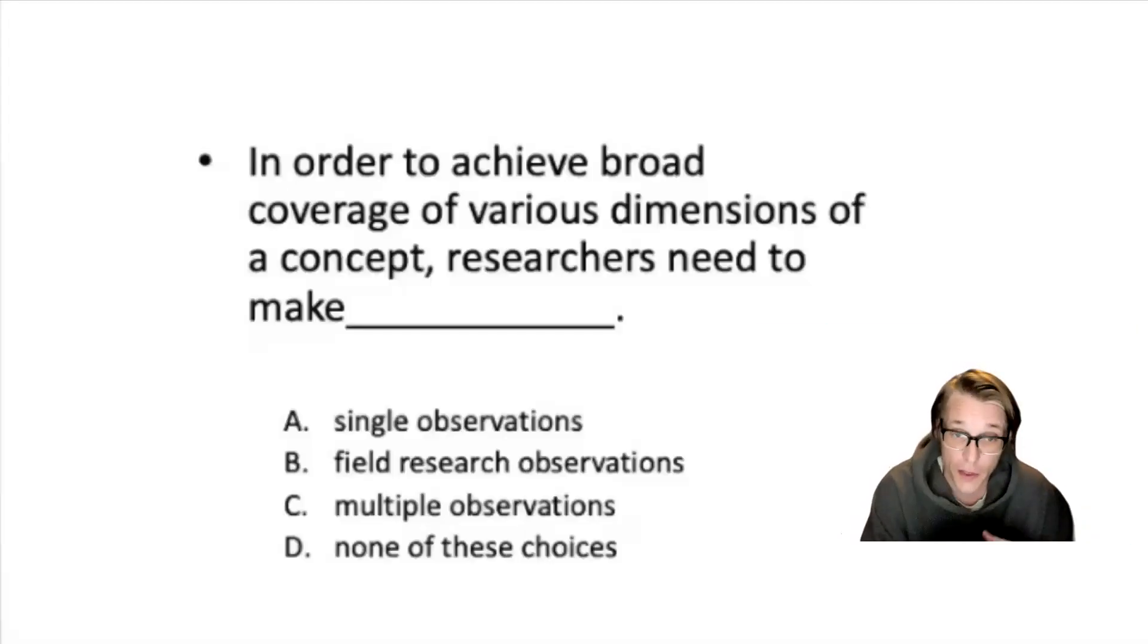Now, the question reads as such. In order to achieve broad coverage of various dimensions of a concept, researchers need to make which of the following? Is it A, single observations? B, field research observations? C, multiple observations? Or D, none of the above? Please pause your video and make your decision. And then we'll unpause it and I'll give you the answer. And then we'll go forward.